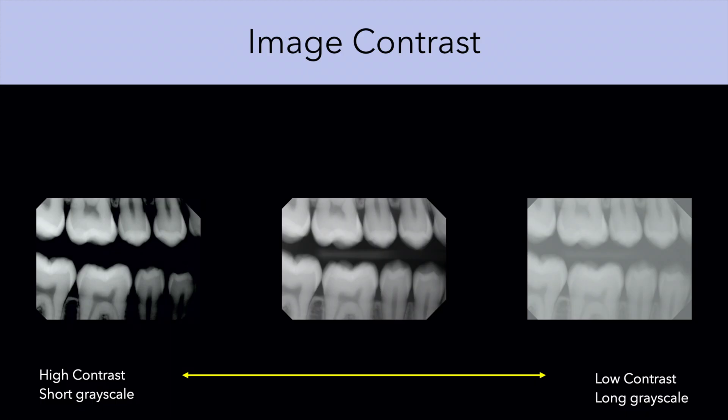The desired contrast is dependent on our diagnostic task. In a high contrast image, the demarcation between enamel and dentin is enhanced; however, details of the trabecular bone are lost. As you change the grayscale of the image, the details of the trabecular bone become more apparent. All vendors of digital imaging equipment provide the ability to make basic adjustments to contrast and density, and we should use these adjustments to increase our efficiency of radiologic evaluation.